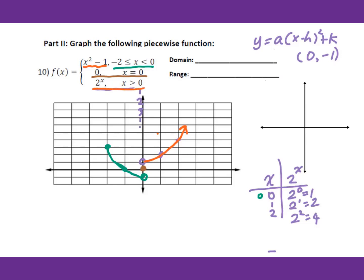Now check the whole graph's domain and range for number 10. The very left point is negative 2, and it goes to infinity on the right. The very bottom point is 0, open parenthesis, and there's no top endpoint, so the range goes from 0 to infinity.